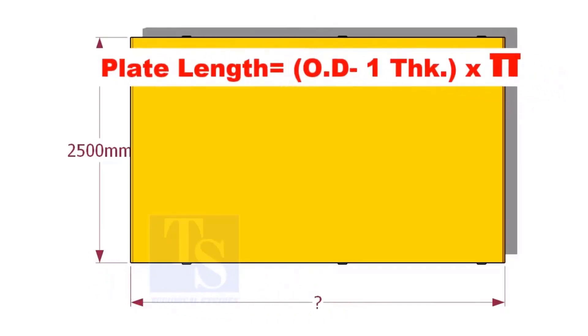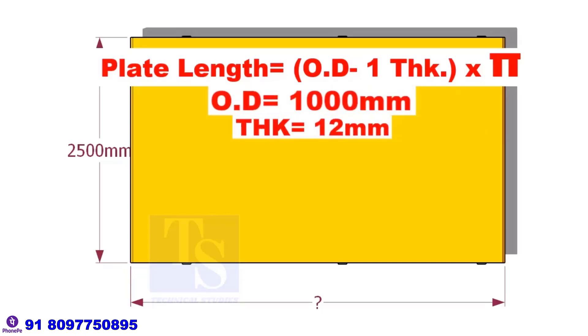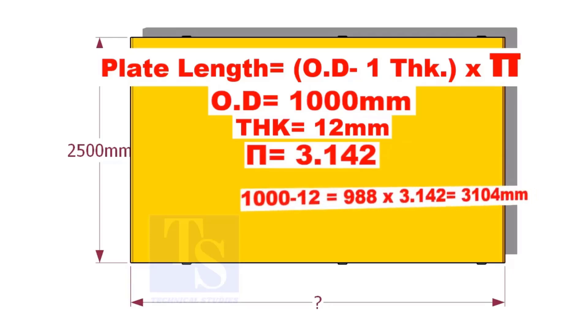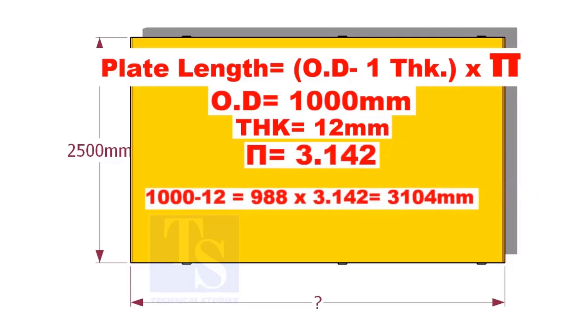To calculate the length, subtract 1 thickness of the pipe from the OD and multiply with the value of pi. 1000 minus 12 is equal to 988 mm, multiplied by 3.142 is equal to 3104 mm.